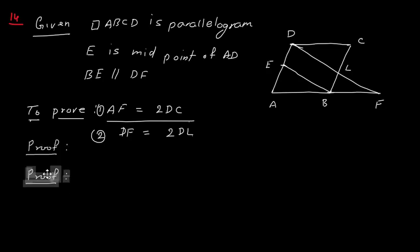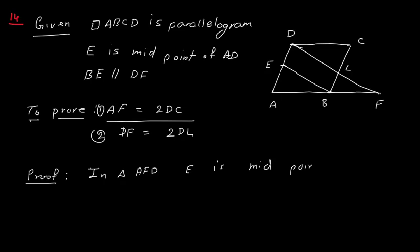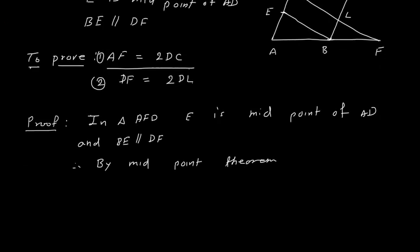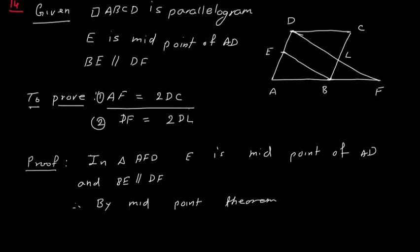So what we can do to prove it? Let us take triangle AFD. In triangle AFD, E is midpoint of AD and BE is parallel to DF. Therefore, by converse of midpoint theorem...